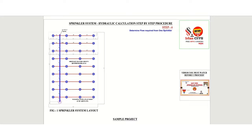Let us start step 4. In step 4, we will determine the flow required or the minimum amount of water required from each sprinkler. There is a formula to calculate the flow from each sprinkler: q equals area into density.